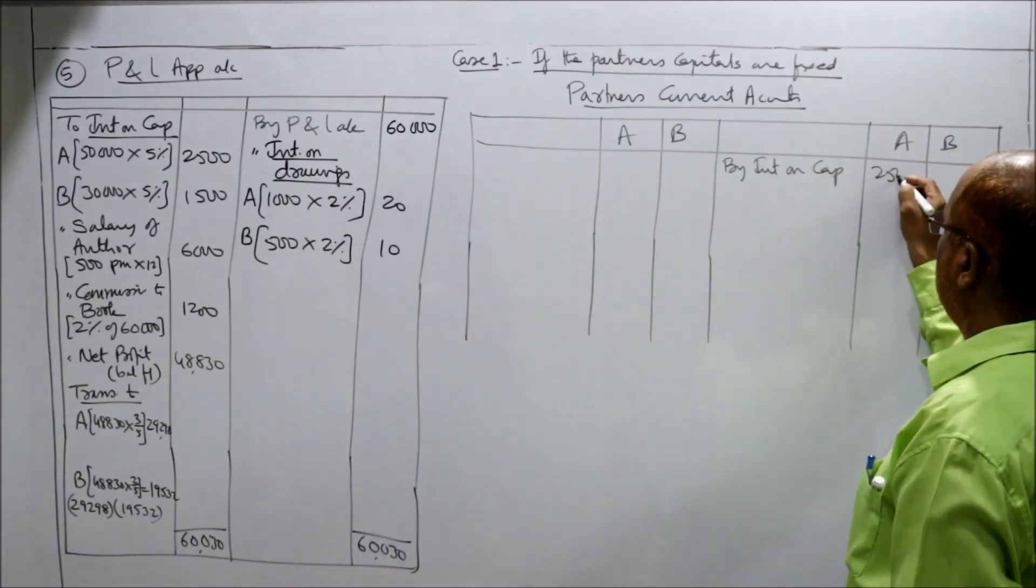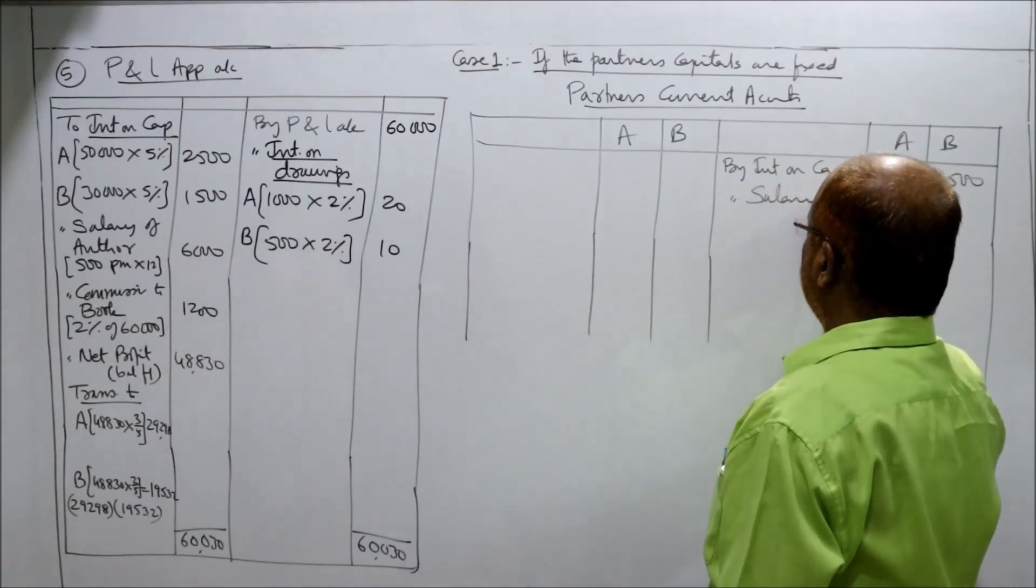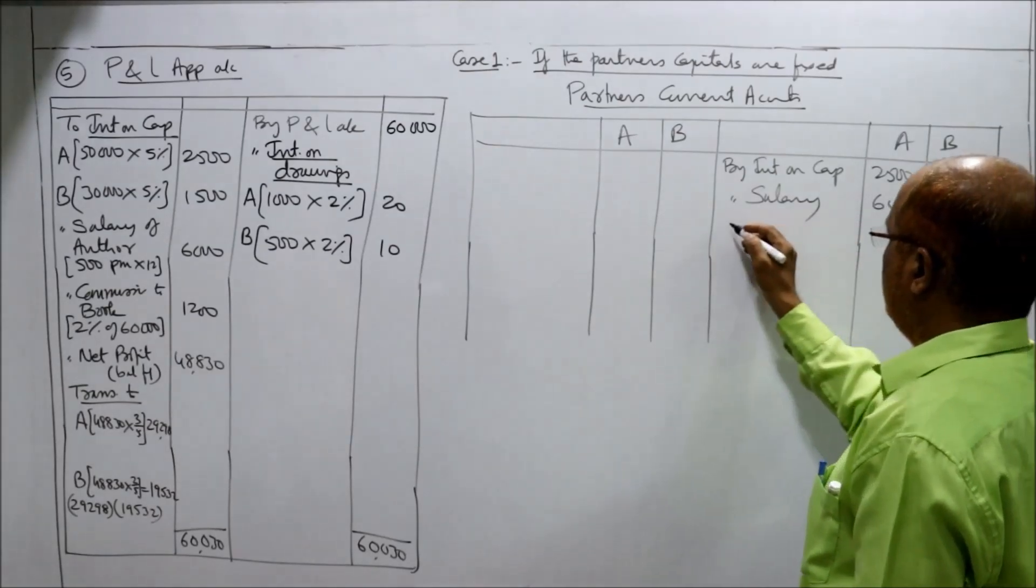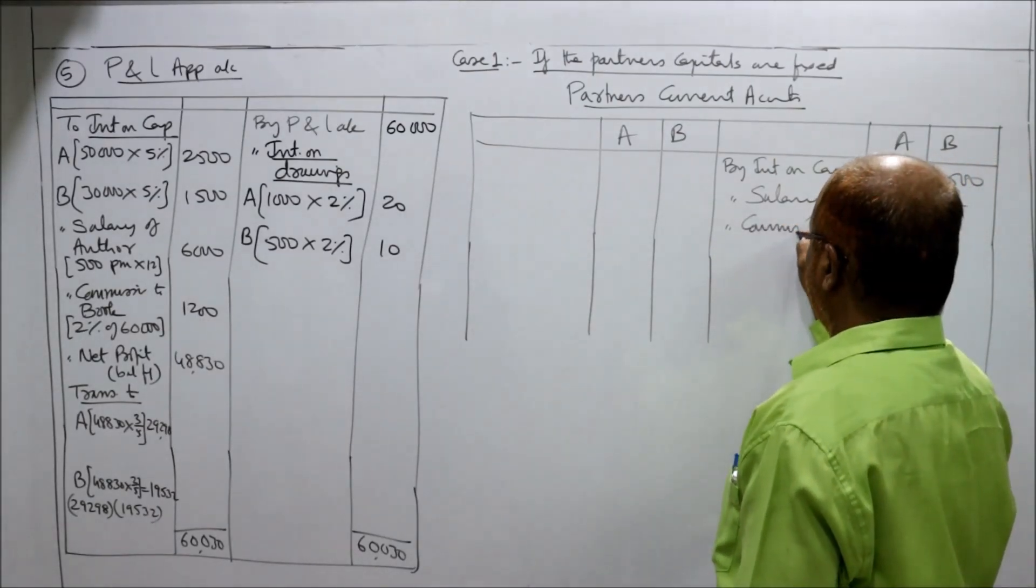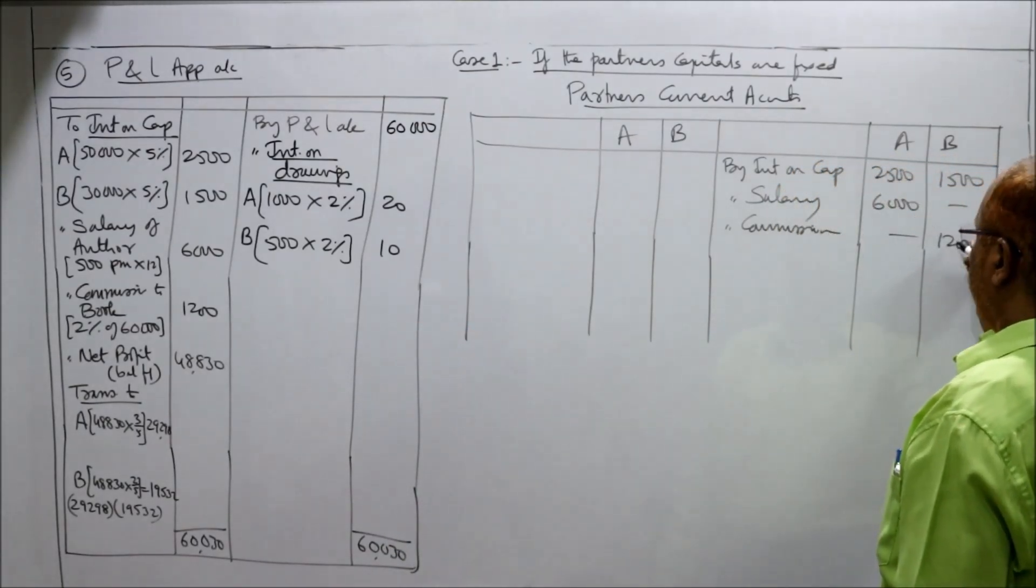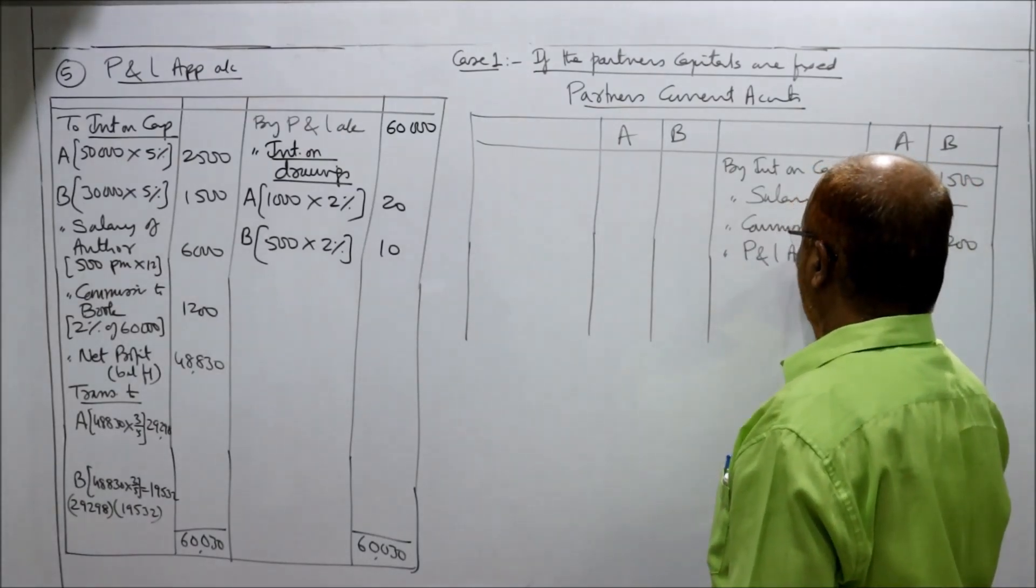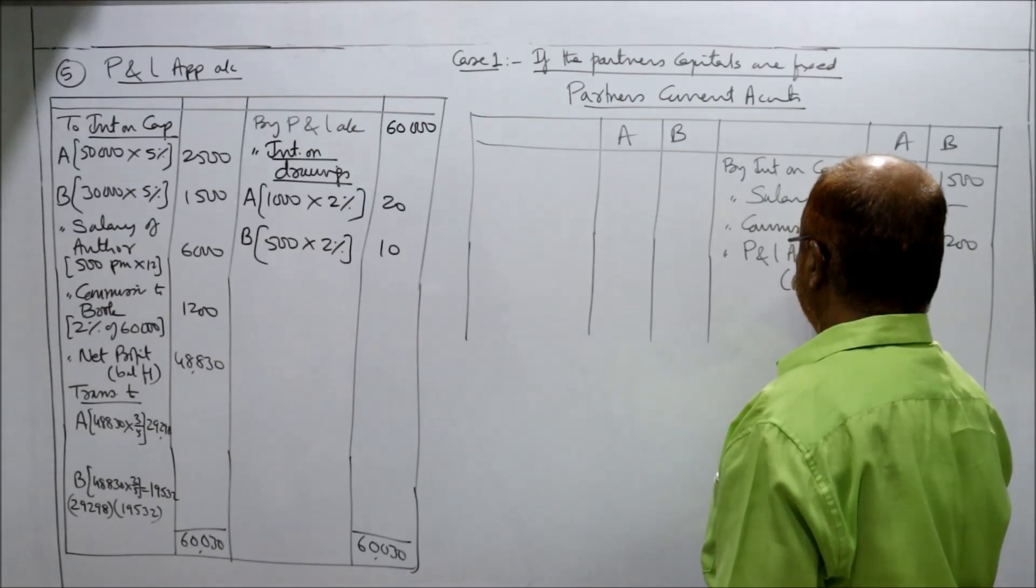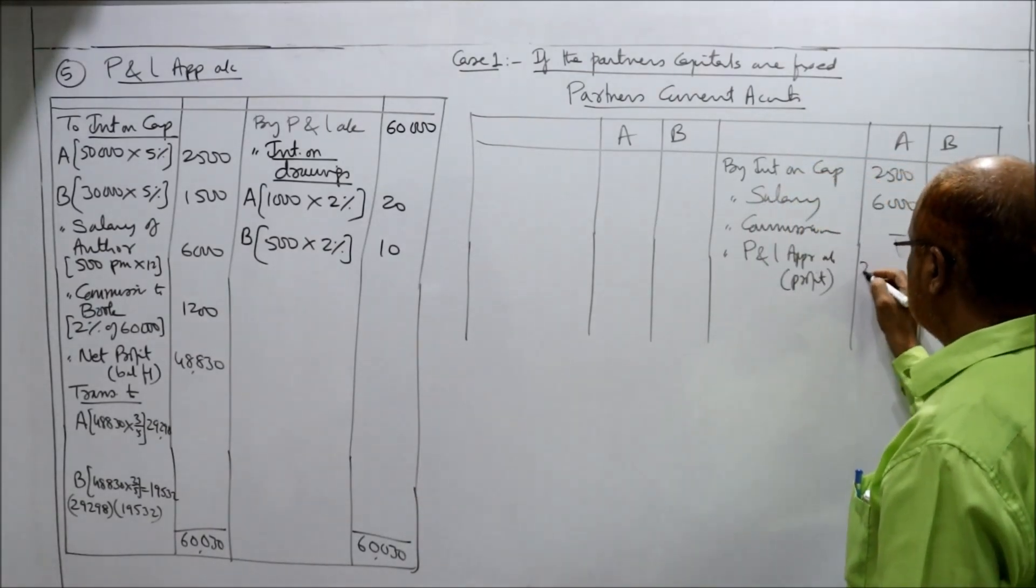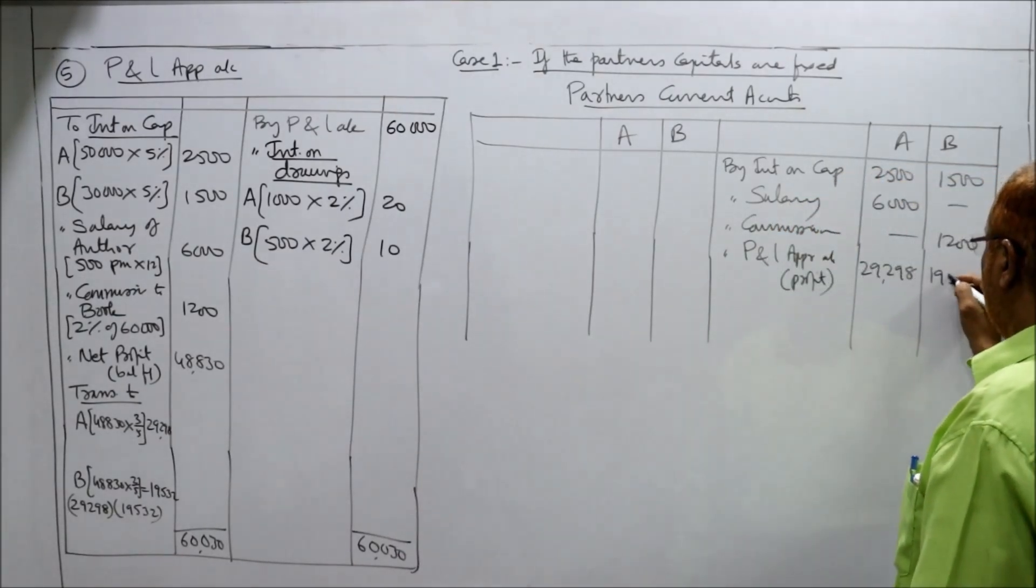By interest on capital, it is $2,500 and $1,500. Then by salary - salary is paid to author, $6,000. By commission - commission is to be paid to book, $1,200. Then we will have by P&L appropriation account profit. The profit is $29,298 and $19,532.